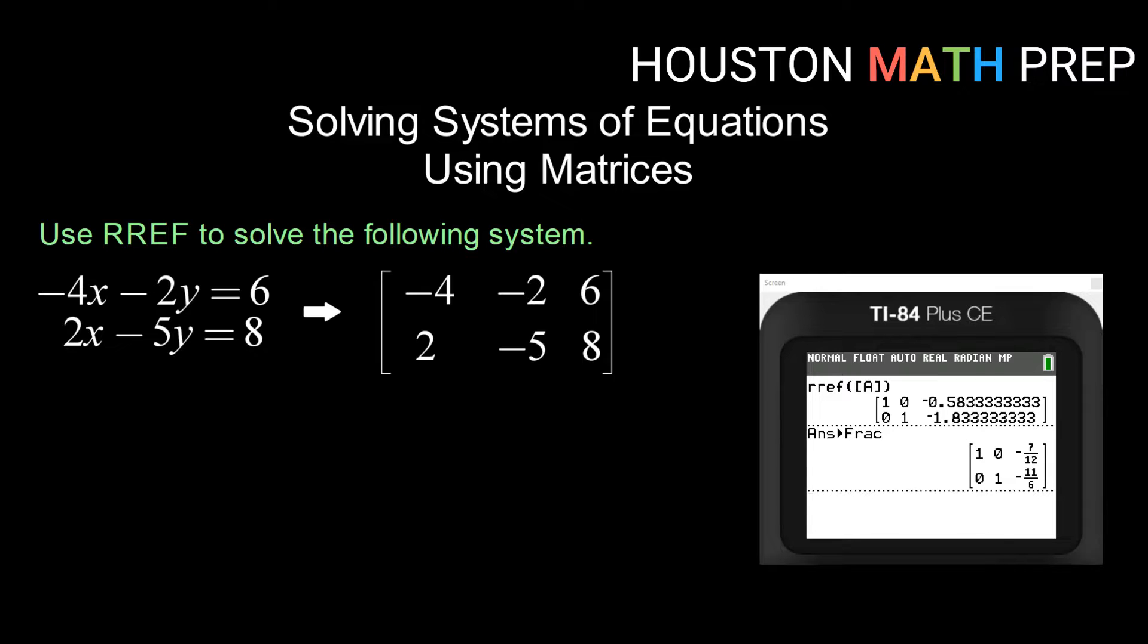All right, remember, the way that we read reduced row echelon form is this first row says 1x plus 0y or just x equals, and then we have negative 7 over 12. And then our second row says 0x plus 1y or just y equals, in this case, negative 11 over 6. So taking that and writing our solution as an ordered pair, we have negative 7 over 12, comma, negative 11 over 6.